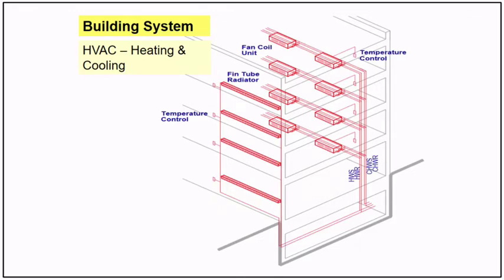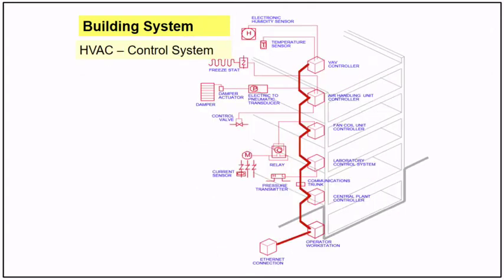For the cooling system, a PM strategy, PM services, and PM activity with defined frequency and routine inspection are needed for: temperature controls, FCUs, valves, fin tube radiators. Air quality is also observed in this system. For the HVAC control system, PM strategy, PM services, PM activity, defined frequency, and routine inspection are needed for: damper actuators, control valves, relays, sensors, AHU controllers, FCU controllers, BMS controllers, and communication links.